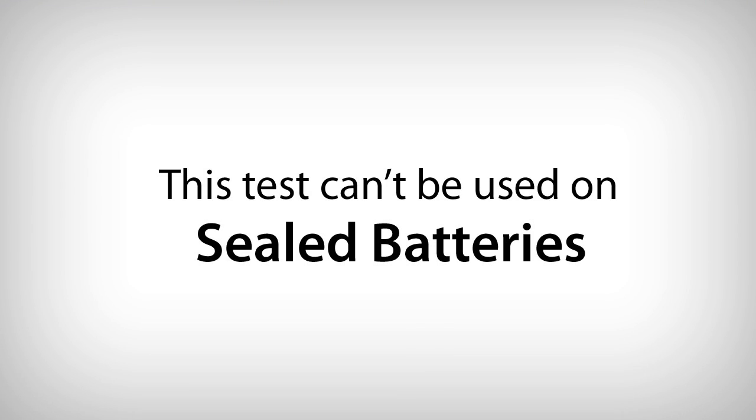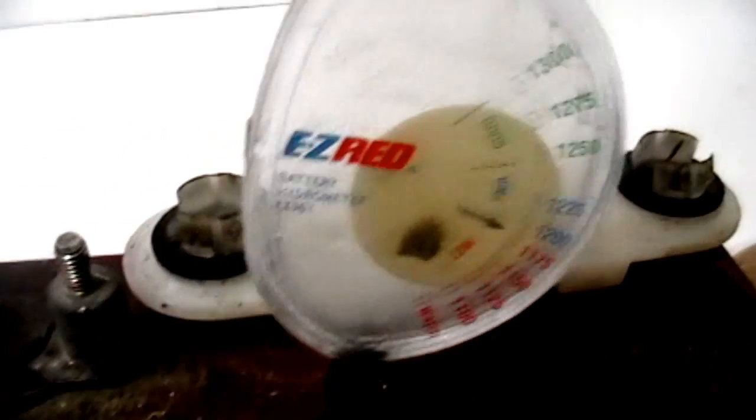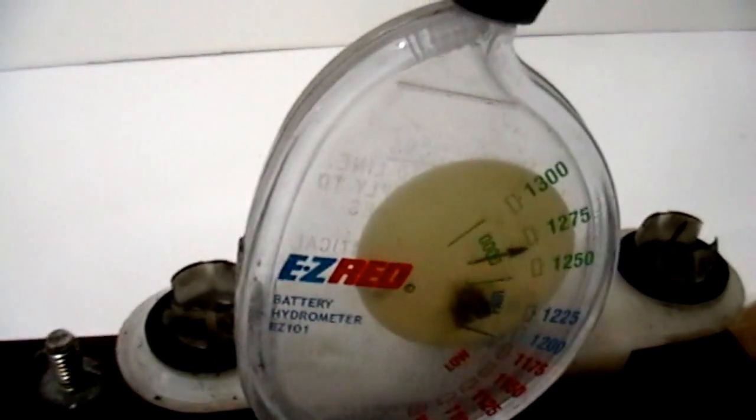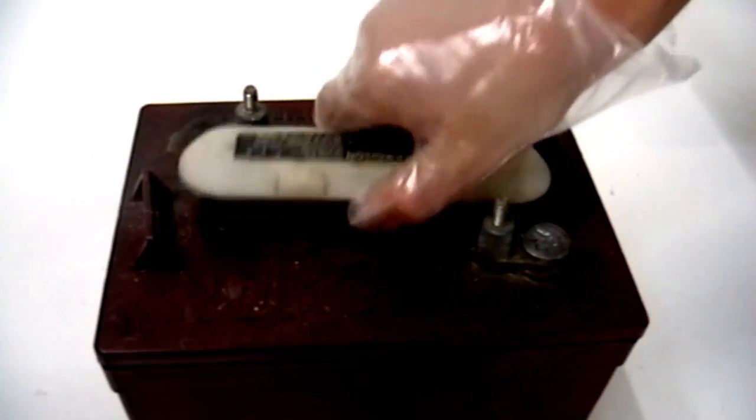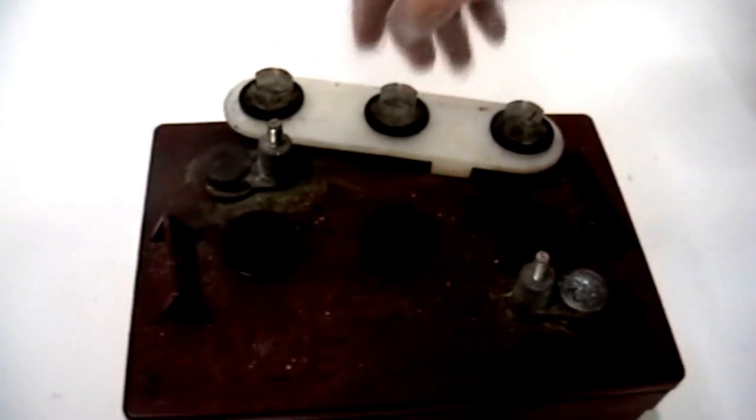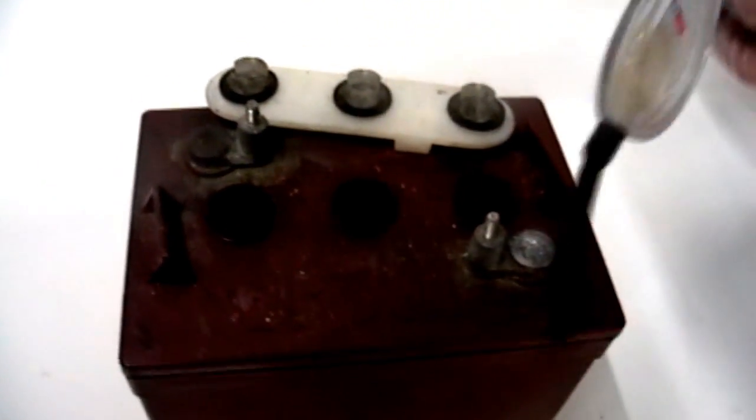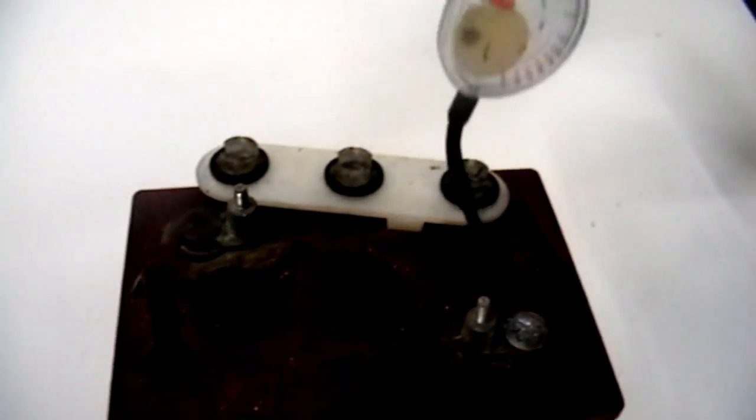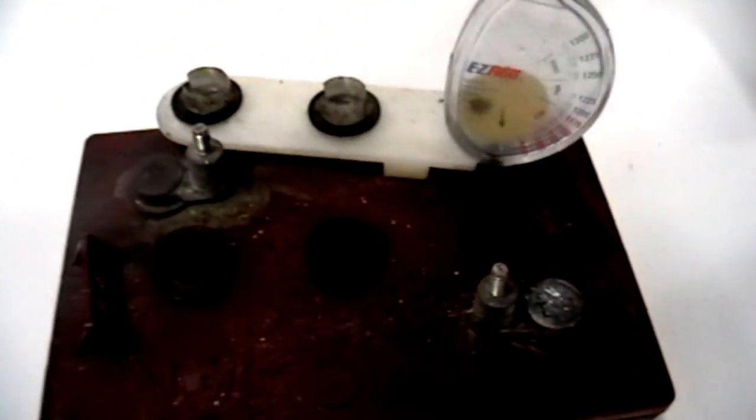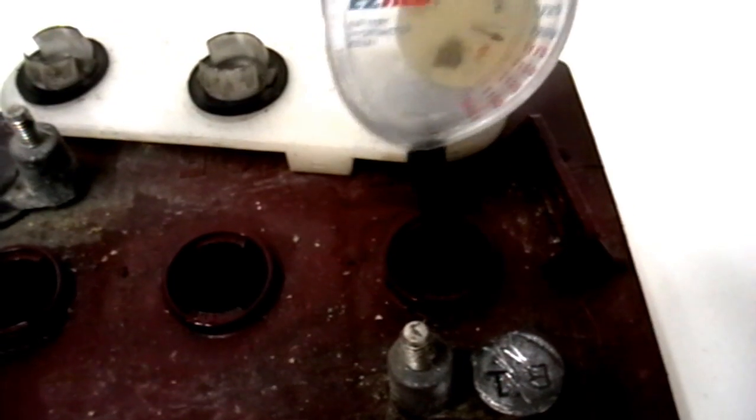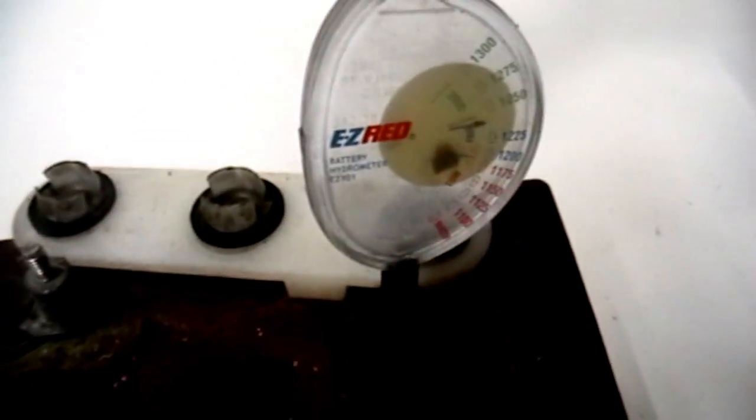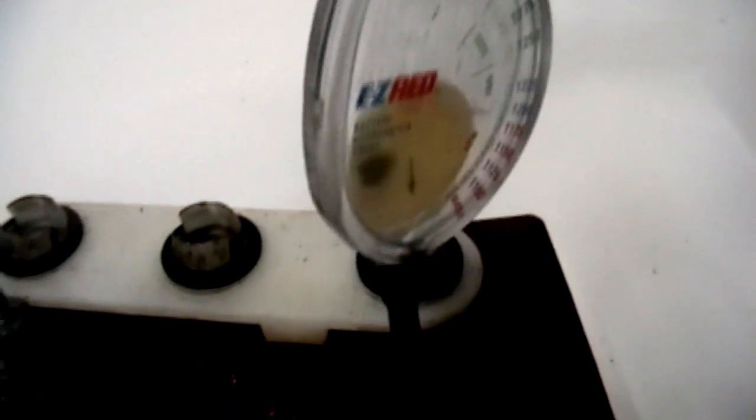If you have the sealed type batteries, this test method cannot be used. Use a temperature compensating battery hydrometer for this test. To use a hydrometer, carefully remove the battery caps. Insert the tube of the hydrometer into a battery cell. Compress the pump to fill the chamber with solution. It is best to do this at least twice for each cell to make sure you get an accurate reading.